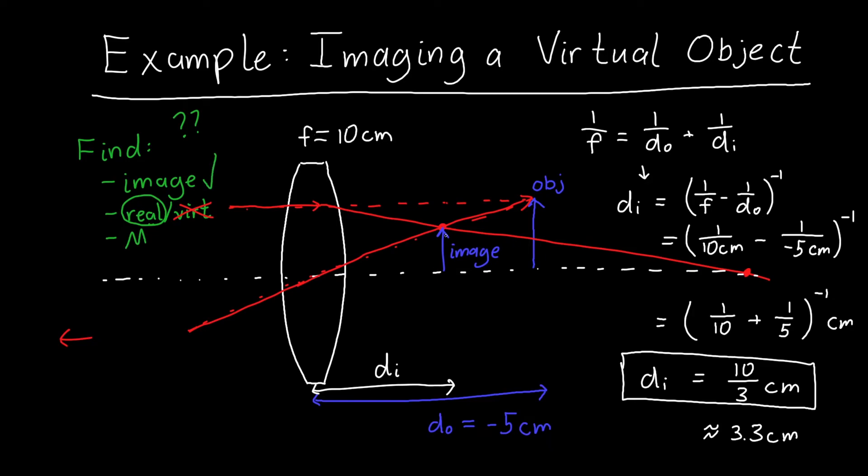Now the only thing left is to find the magnification. We can do that with our good old friend the magnification equation, which is equal to, for a single lens, negative di over do.